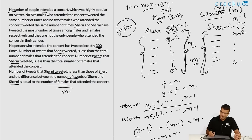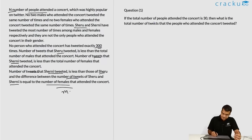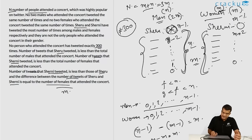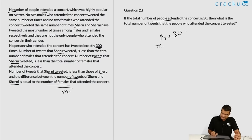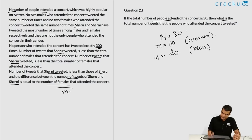If the total number of people who attended the concert is 30, that is N = 30, and since N = 3m, m = 10. So the number of women is 10 and the number of men is twice that, which is 20. Now let us find the total number of tweets by all people who attended the concert.